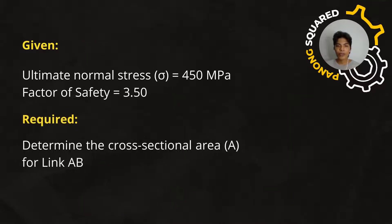From the problem, we are given the ultimate normal stress which is equal to 450 MPa. Now this stress refers to the maximum stress that the material of the link AB can withstand under an applied force. Also, we have the factor of safety that is given, equal to 3.50.